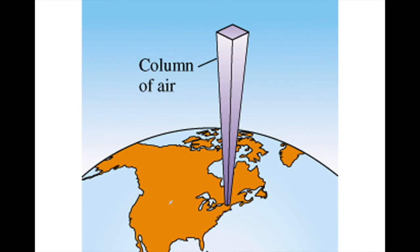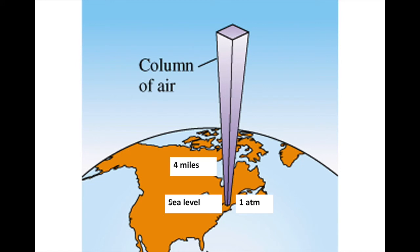Air pressure at sea level is one atmosphere, or 760 millimeters of mercury. As we rise in elevation, there is less air, so air pressure drops. At four miles up, the pressure is about half an atmosphere, and at ten miles it is about 0.2 atmospheres. Air pressure changes depending on altitude.